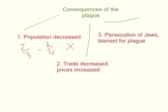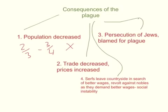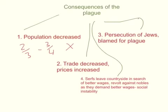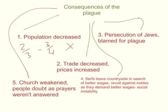Another terrible consequence was the persecution of Jews. The Jews were considered the ones responsible for the plague, blamed for it, and they suffered as a result. And finally, the church loses power again. Because people were praying to God to stop the terrible disease and stop all the death, and it didn't happen, people started to doubt the church and their belief in God.